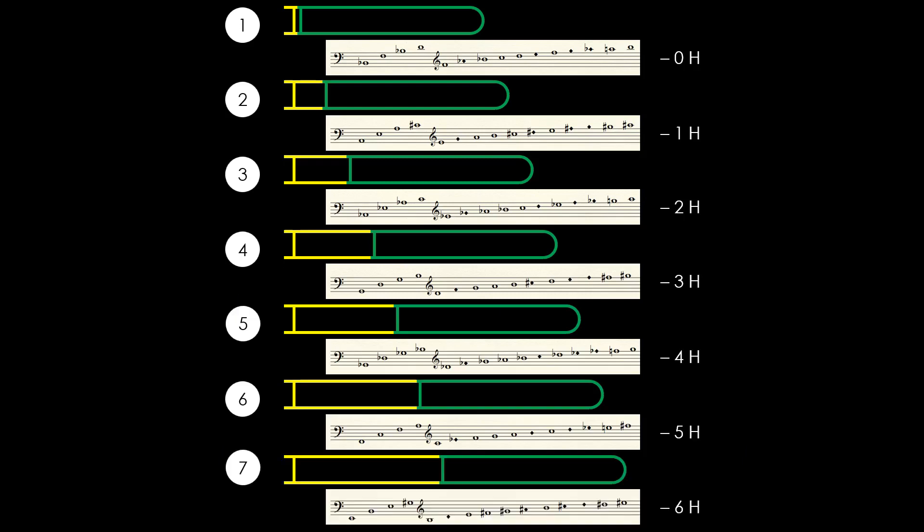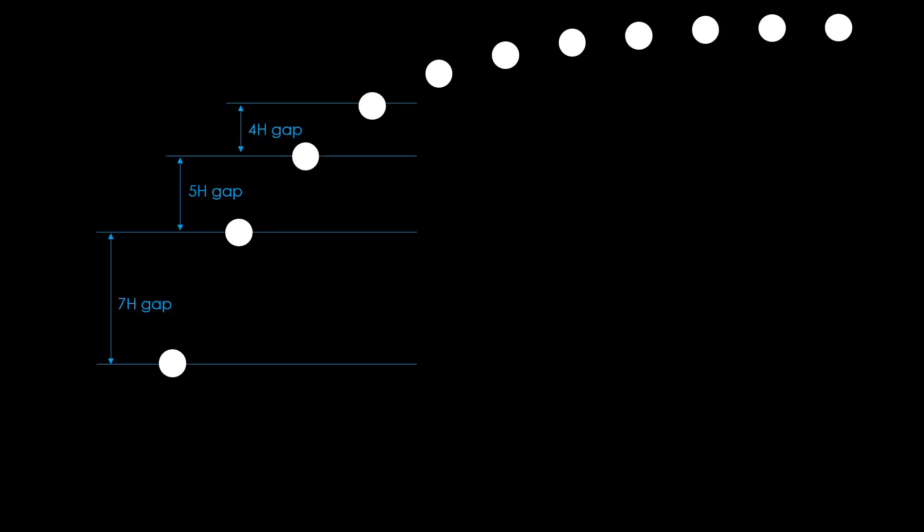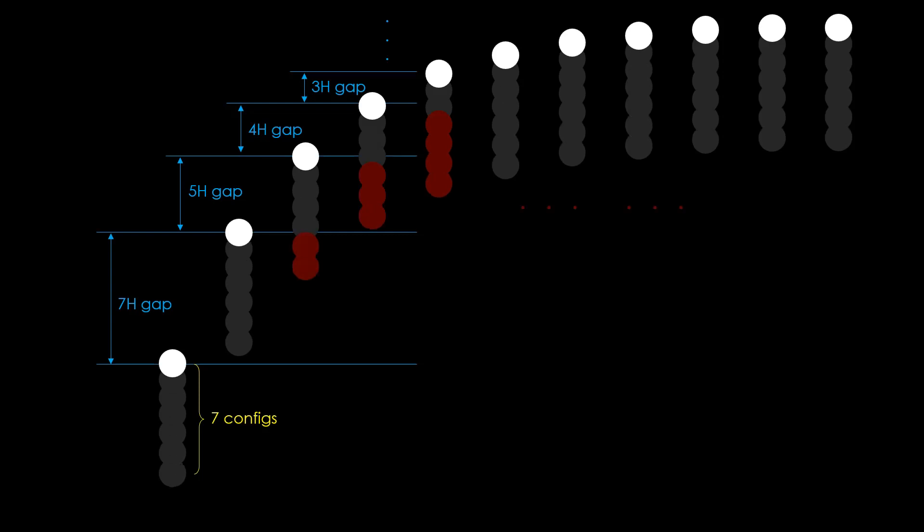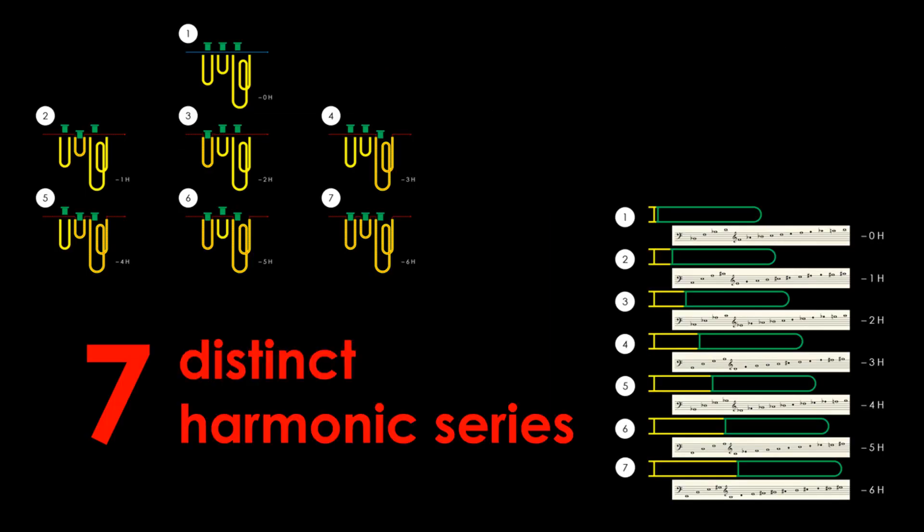For trombones, the lowering of the natural harmonic series is done by directly changing the length of vibrating air column using the slide. In fact, we have only just looked at the second and third harmonics. Since higher-order harmonics are increasingly closer to each other, filling up the gap of the lower-order harmonics more than guarantees the gaps at the higher-order harmonics are filled. As a result, brass instruments are able to cover multiple octaves of the chromatic scale just by accessing seven distinct harmonic series.